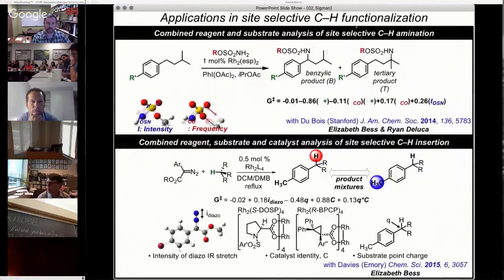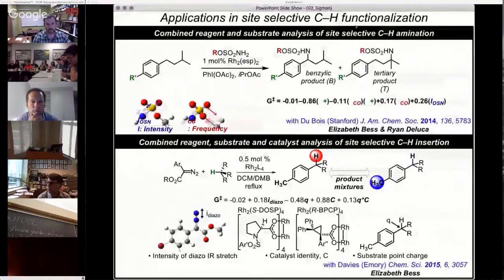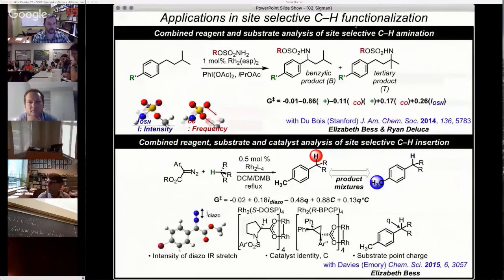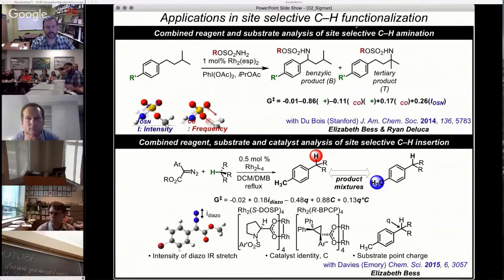You'll see two collaborations we've published on previously. One with the DuBois lab in the top and one with the Davis lab on the bottom. Both of them asking very similar questions: how do you control site selectivity of a CH functionalization? The top is an amination with the DuBois lab where we looked at the function of the R group on the sulfamate ester and the R prime group on the substrate. We see that the substrate sigma plus value is correlated, and then we see the sulfamate CO stretch and an intensity of the OSN stretch. These are complicated parameters. This is something that we've been trying to deal with over the years. But nonetheless, you can correlate both substrate and reagent in this particular example. We were able to enhance the selectivity rather significantly in a number of cases.